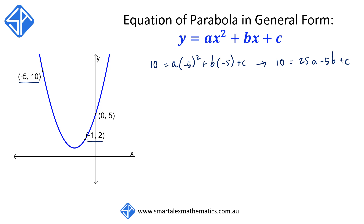To get our second equation, we use the next point, negative 1, 2, and substitute this in, so we get 2 is equal to a times negative 1 squared plus b times negative 1 plus c. Our second equation becomes 2 is equal to a minus b plus c.